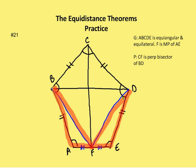Triangle BAF is congruent to triangle DEF by side-angle-side. By CPCTC, BF is congruent to DF. I also know CB is congruent to DC. Since both C and F are equidistant from the endpoints of segment BD — meaning two points are equidistant from the endpoints of a segment — they form the perpendicular bisector of that segment. So CF is the perpendicular bisector of BD.